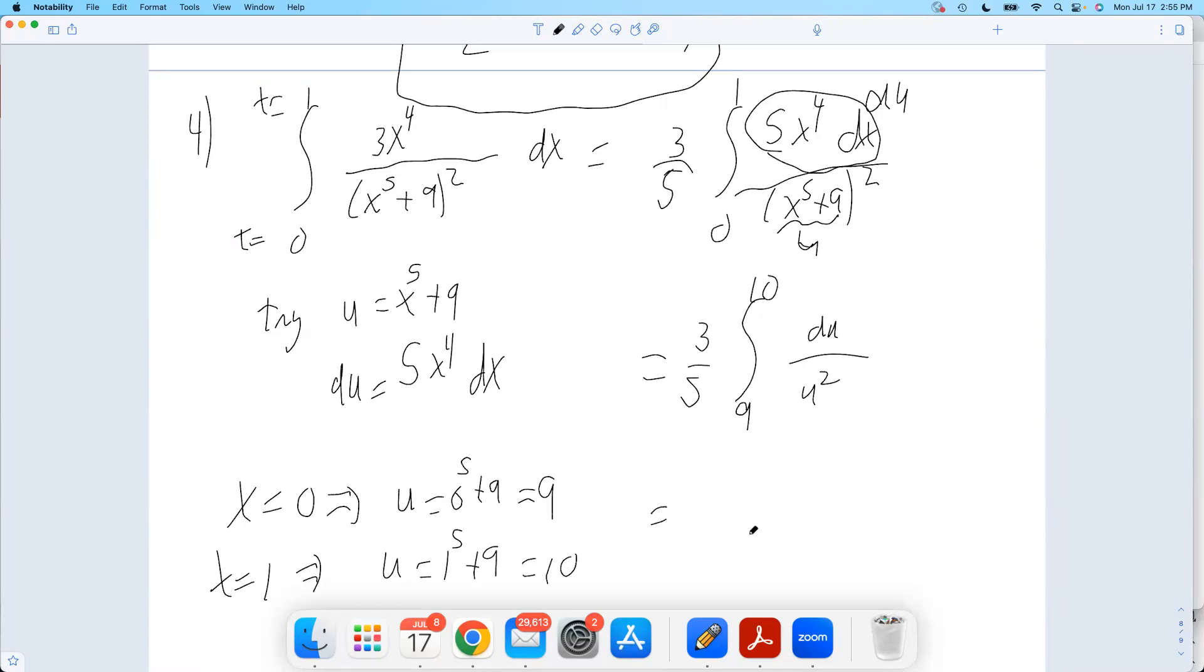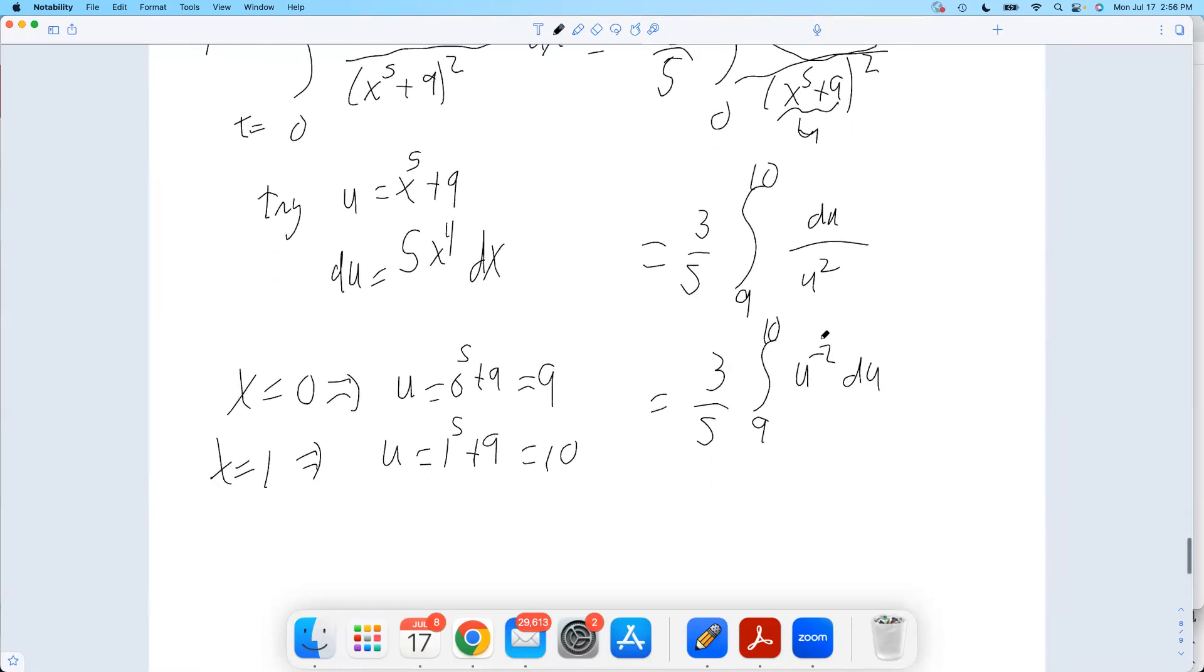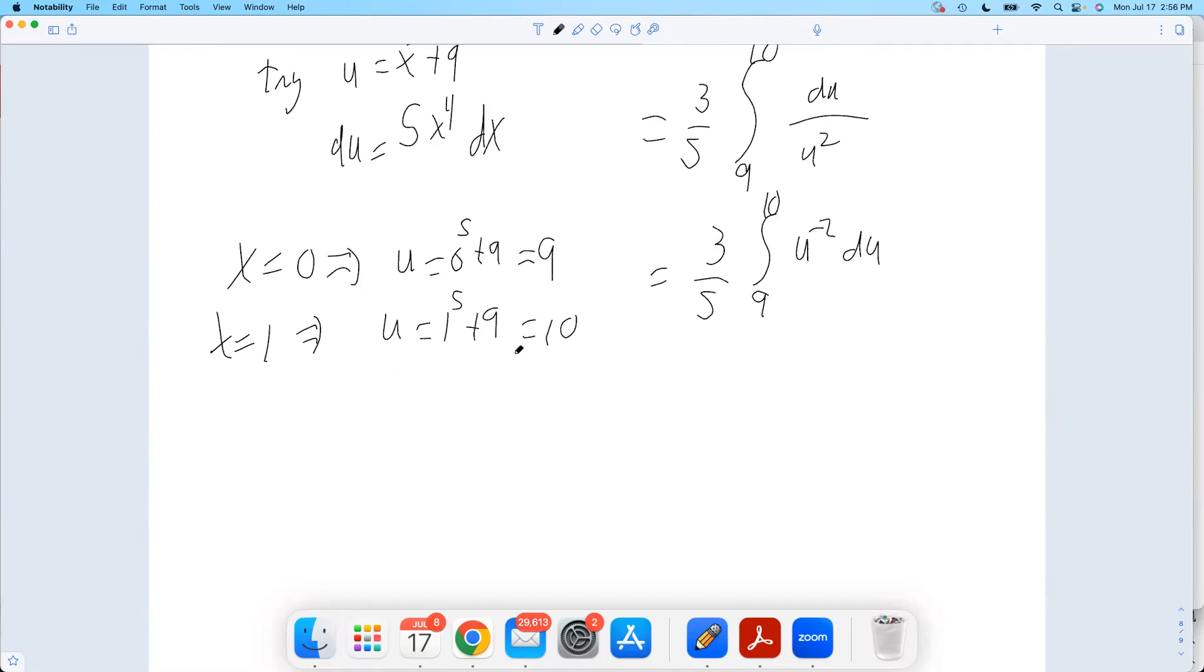Now, here, I'm going to rewrite this as u to the negative two power. I didn't do any calculus there. That's just rules of exponents. This is not, don't think just because you have one over something that it's going to be a natural log. I know we've had a bunch of natural logs pop up today. One over junk is not necessarily natural log. That's not u to the first power. That's u to the second power in the bottom. This is just power rule.